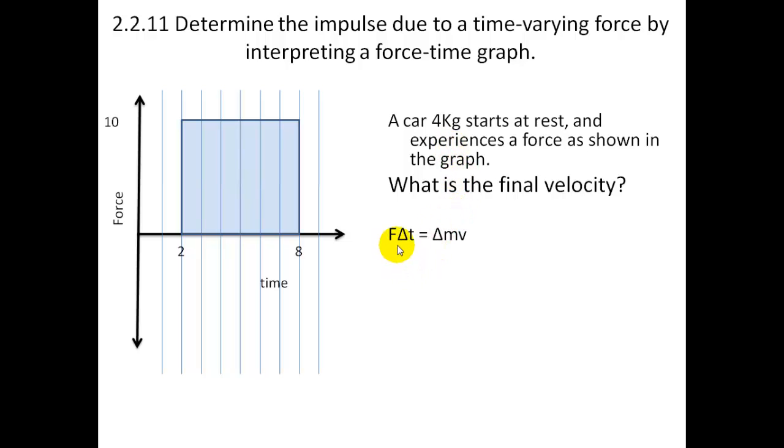Well, we know that F∆t is going to be 10 times by 6, and that's going to be the change in momentum, because it's the area underneath here. So it's 10 times by 6 gives you 60 kilograms meters per second. This will be equal to the momentum change. If you know the mass, you know the change in velocity.